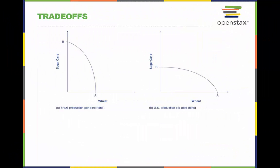The U.S. production possibilities frontier is flatter than the Brazil production possibilities frontier, implying that the opportunity cost of wheat in terms of sugarcane is lower in the U.S. than in Brazil.